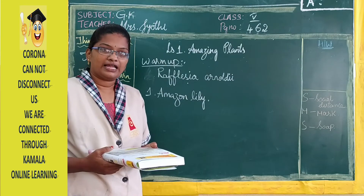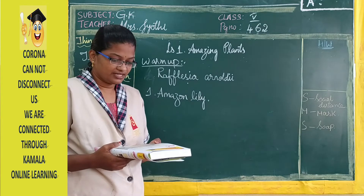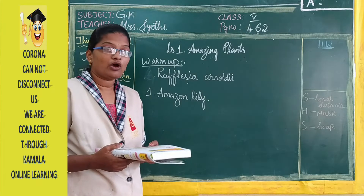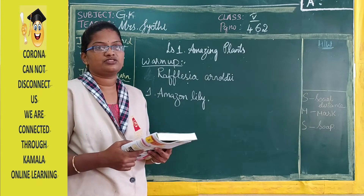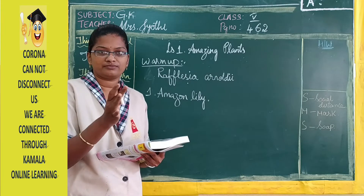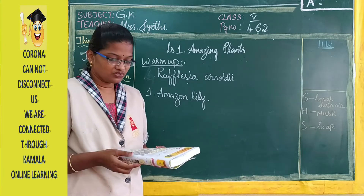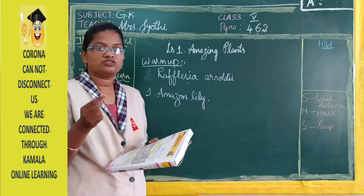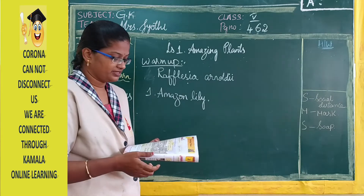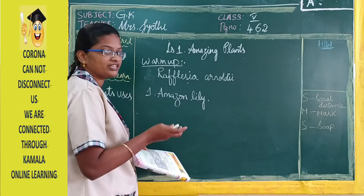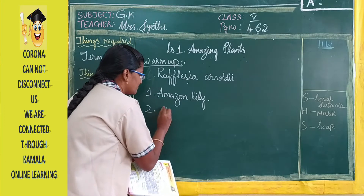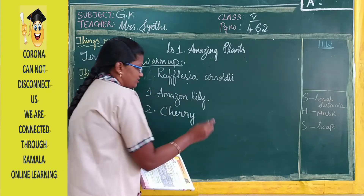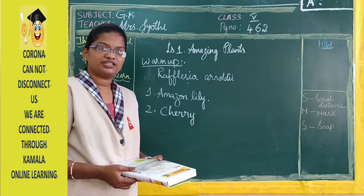The second question: Plums, almonds, pears and peaches belong to this family of plants. Plants are divided into families and categories. Among the hints given, the answer is Cherry — plums, almonds, pears, and peaches belong to the Cherry family of plants.